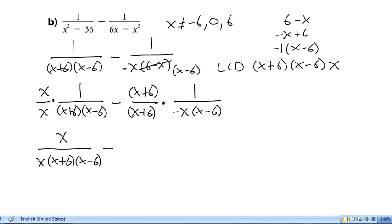Let's move the negative up to the top, and multiply it through these. So, we'll get negative x minus 6.